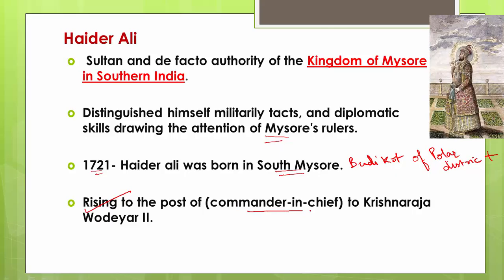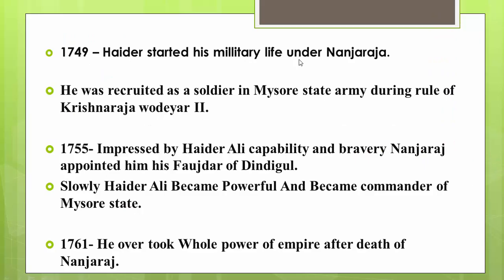Haider Ali rose to the post of Commander-in-Chief to Krishna Raj Wodeyar II. His ancestors were foreigners who had settled in Delhi and later came to southern India. He himself was illiterate but earned the favor of Nanjaraj through his military skills and diplomatic abilities.